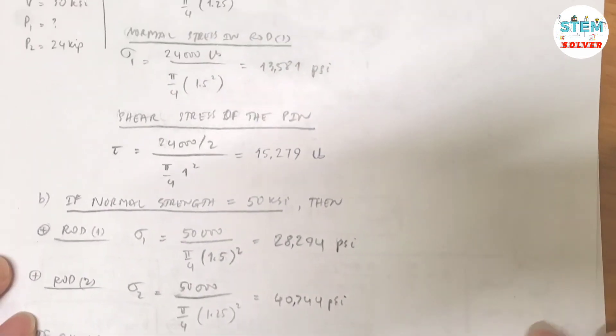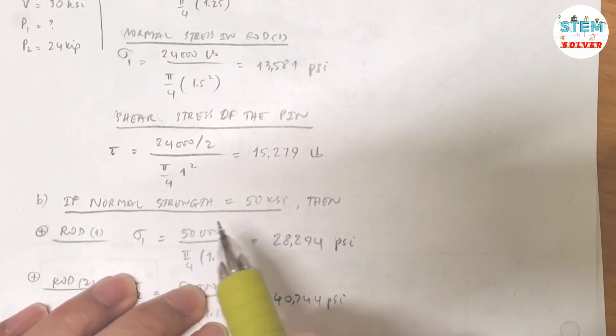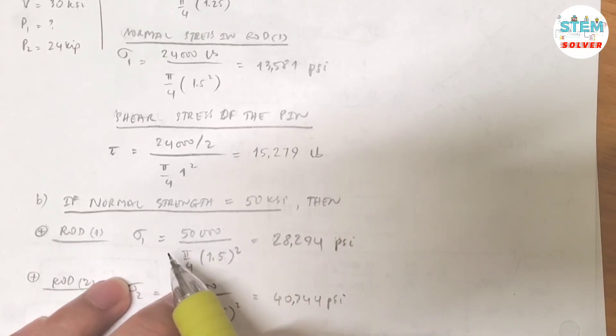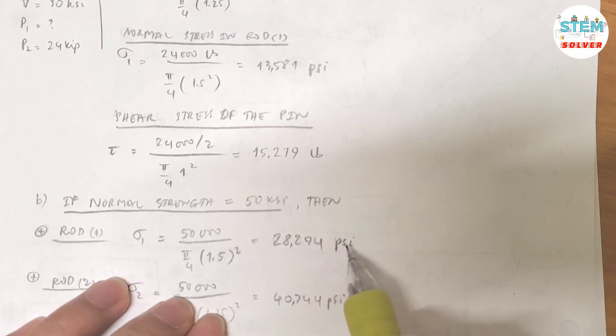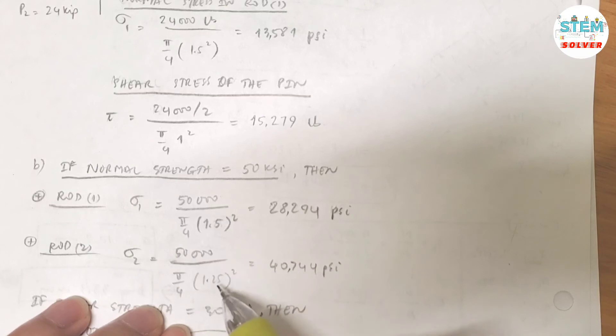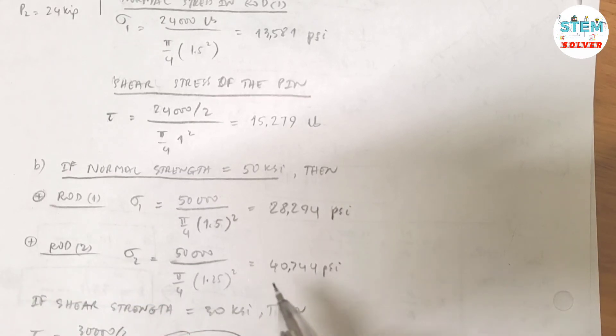Now if the normal strength is equal to 50 psi, then for rod 1 the normal stress is equal to 50,000 pounds divided by the area, same area as we worked up here, pi over 4 times 1.5 squared. That gives you 28,284 psi. For rod 2, same formula but same force, different diameter. So again, doing this calculation gives you 40,744 psi. That is the case if normal strength is equal to 50 psi. These are the normal stresses for the case that normal strength is equal to 50 psi.